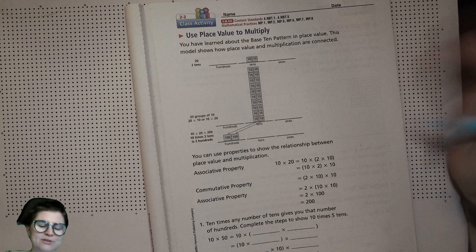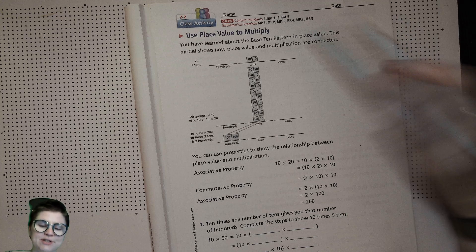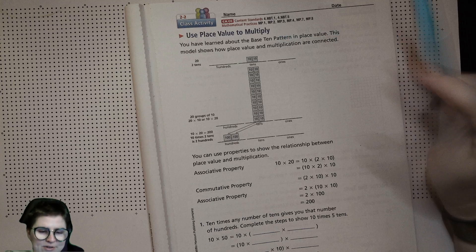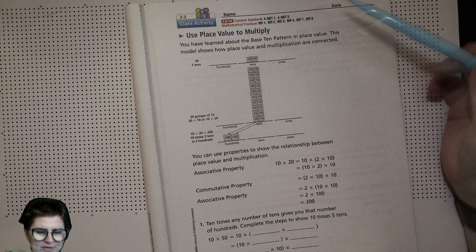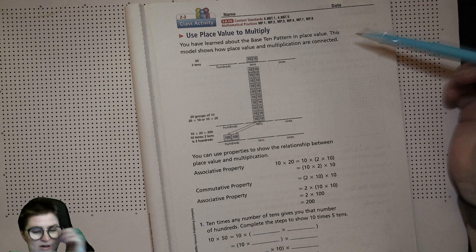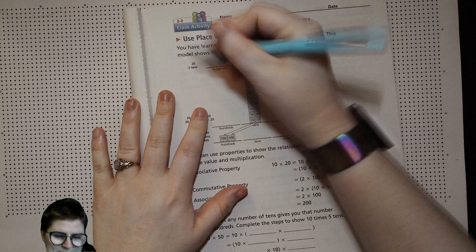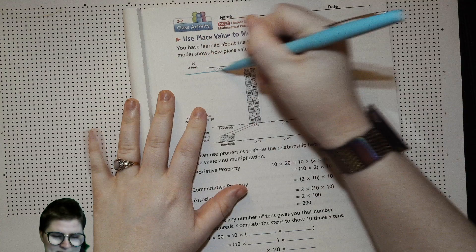Since you have learned about the base 10 pattern in place value, this model shows how place value and multiplication are connected.